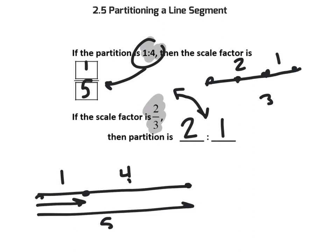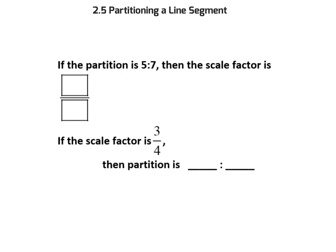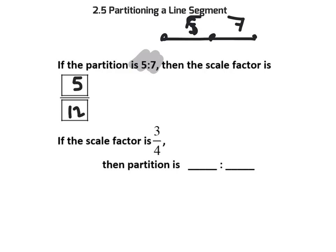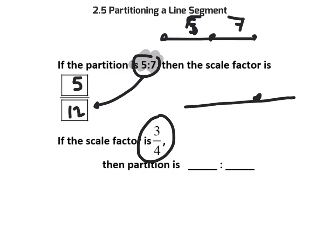Scale factor to partition, and partition to scale factor. Here is our partitioning ratio of 5 to 7. There are 5 parts, then 7 parts — 12 total parts. So the scale factor would be 5 over 12. Going the other way: if the scale factor is 3 to 4, that would give you a partitioning ratio of 3 to 1.